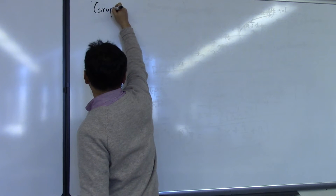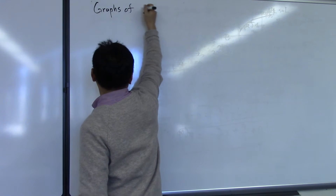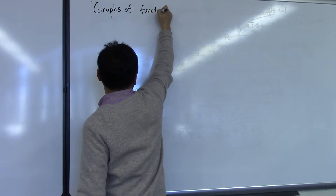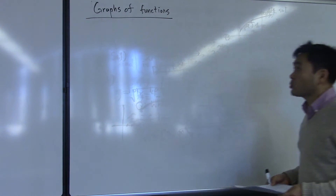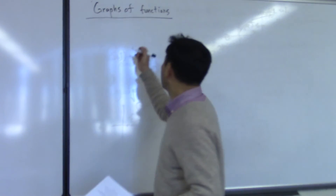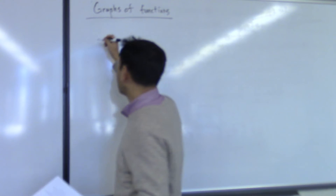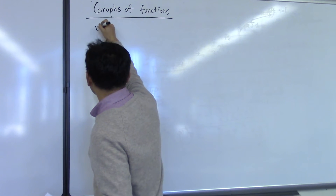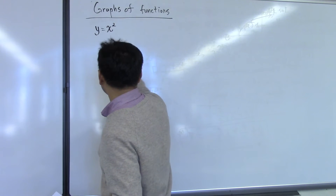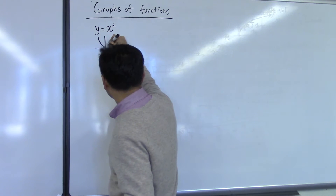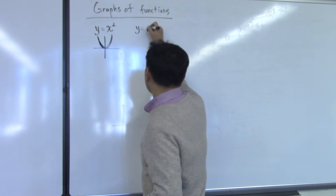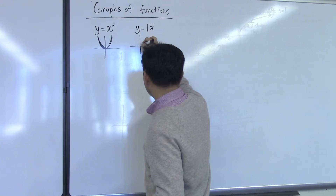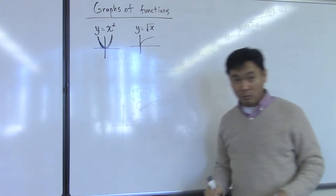Graph of functions. You have to memorize some graphs for calculus sequences — one, two, and three. Let me list some of the graphs that you should absolutely memorize. y equals x squared, which is this parabola. y equals the square root of x — this is a half of the parabola that's opening to the right.